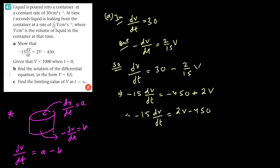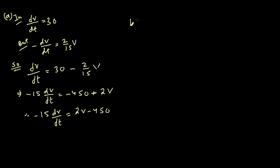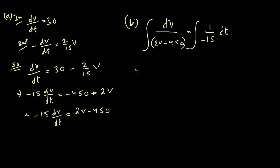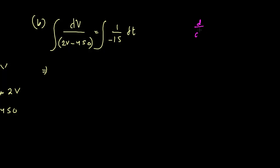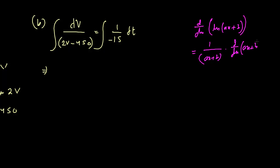The next part is solving the differential equation — question B — using the separable method. We bring all V terms to one side. To integrate the reciprocal of a linear expression, we use the reciprocal rule of integration, which comes from the opposite of differentiation. This rule only works for the reciprocal of a linear expression — not quadratic, trigonometric, or anything else.